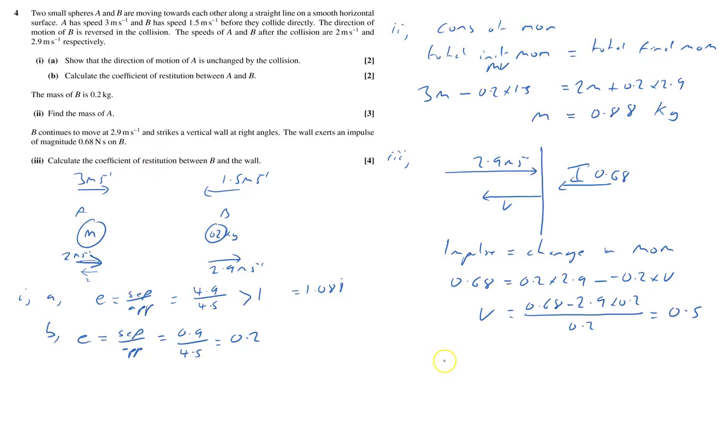It was a coefficient of restitution. So E equals separation speed over approach speed, which equals separation speed is how fast it moves away from the wall. That's 0.5 divided by how fast it approaches, which is 2.9. And that equals 0.172137. Like so. And that's all done.